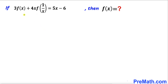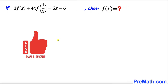Welcome to pre-math. In this video we have got this functional equation: 3 times f of x plus 4x times f of 1 over x equals 5x minus 6, and now we are going to find the value of f of x.